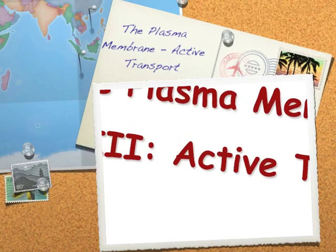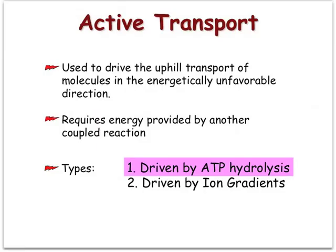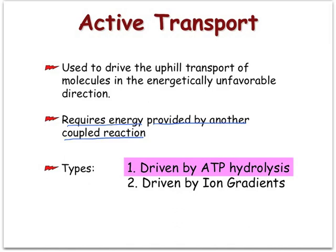We move on now to talk about another topic related to the plasma membrane, and the focus now will be on active transport. Active transport is a process that is used to drive the uphill transport of molecules in the energetically unfavorable direction. This type of transport requires energy which is provided by another coupled reaction. There are two different types of active transport: the one driven by ATP hydrolysis and the one driven by ion gradients.